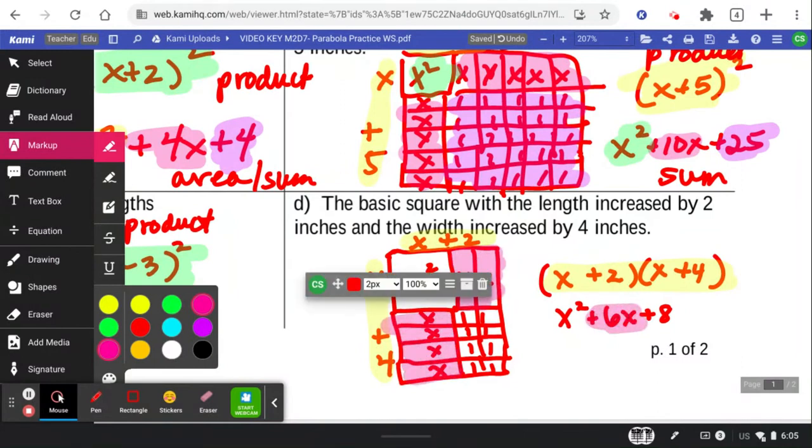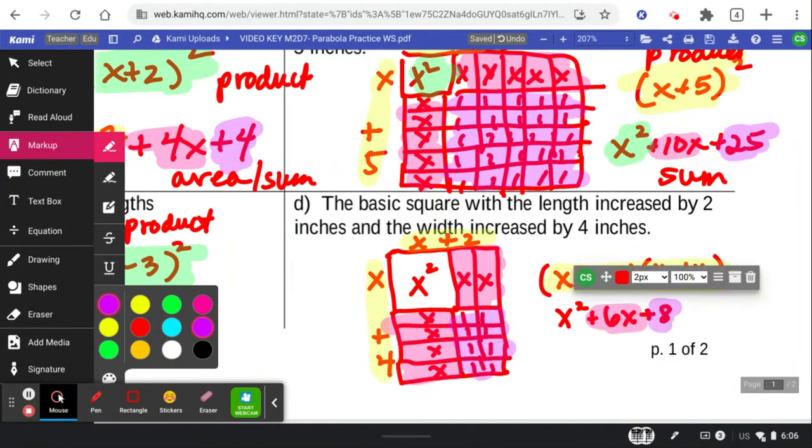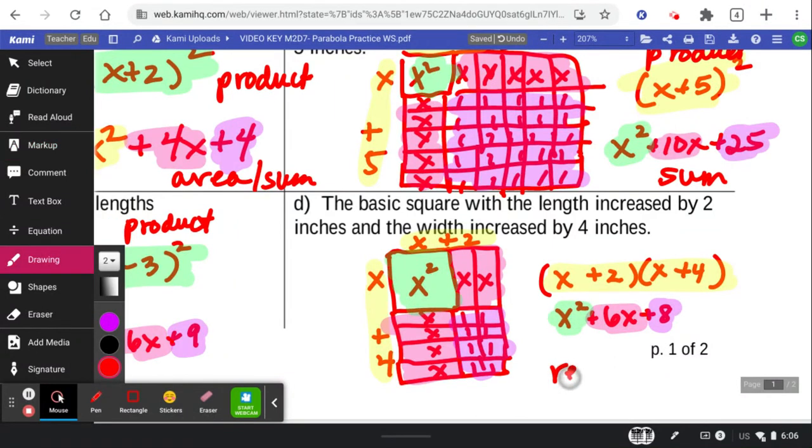We can see the 6x's there. We can see the 8 constant there. And we can see the x squared here. So it doesn't have to be a square with the same lengths on either side. It can be a rectangle.